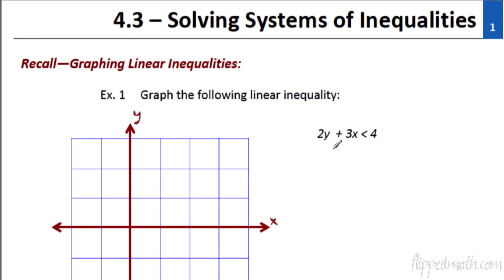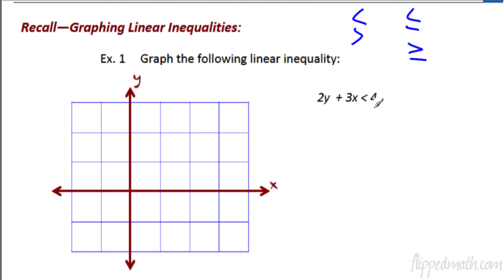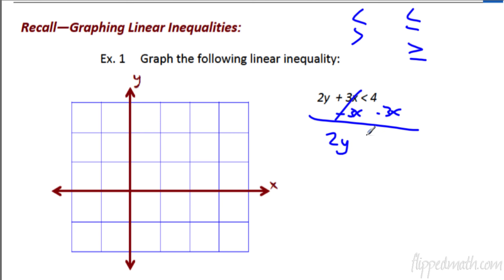An inequality uses less than, greater than, less than or equal to, or greater than or equal to. So what you have to remember — let's graph this and I'll tell you what you have to remember when you get to it. You always have to solve it for y, so we're going to start by subtracting 3x from each side. We get 2y is less than negative 3x plus 4.